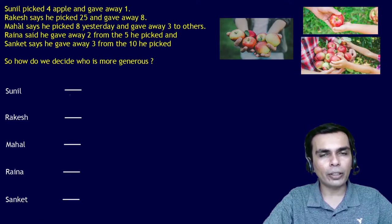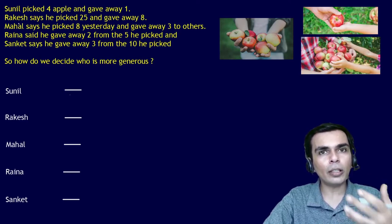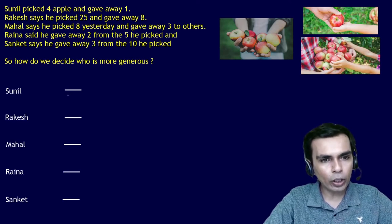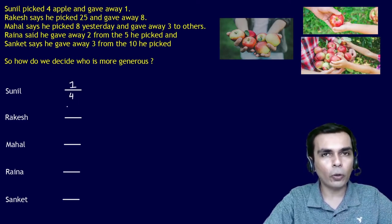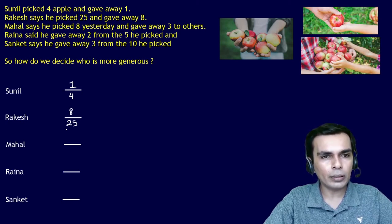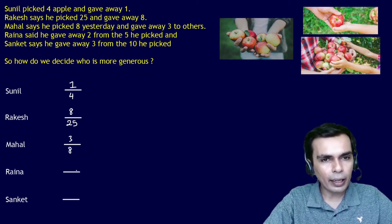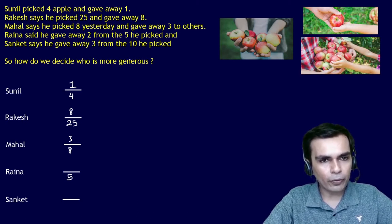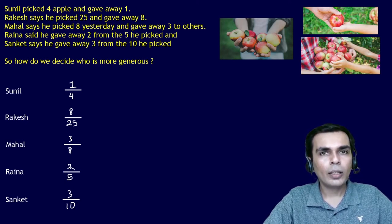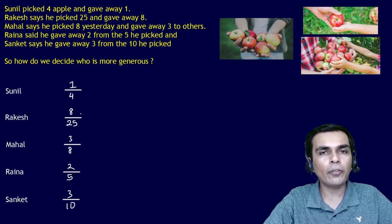So let's see this situation in terms of fractions — what fraction of their total collection they give away. Sunil had 4 apples and gave away 1, so that's 1/4. Rakesh picked 25 and gave away 8, that's 8/25. Mahal picked 8 and gave away 3, that's 3/8. Raina gave away 2 from 5, and Sanket gave away 3 from 10.